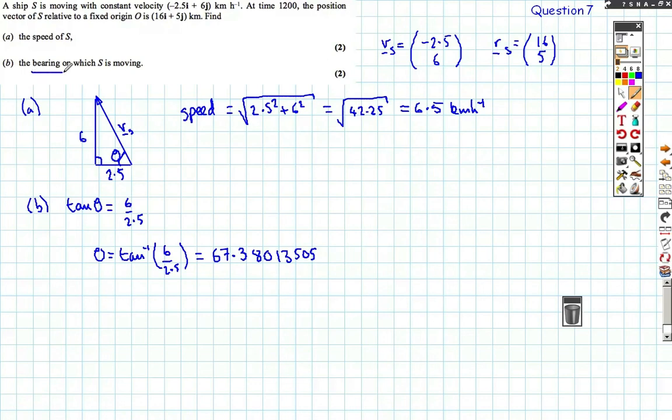But I am asked for the bearing, and this is something that often people get confused by. So because my vector, let's look at our north line, because my vector definitely went 2.5 to the left and 6 up, minus 2.5i, 6j, I actually need to find this angle all the way around here. Bearings are measured clockwise in three digits, and I always start from north.